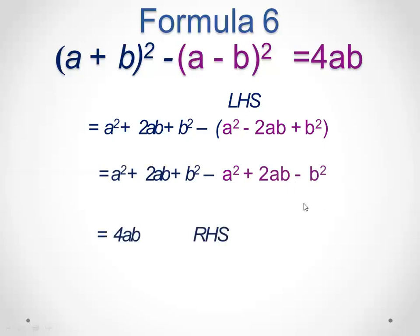Now distributing the minus sign, a square and minus a square cancel out, b square and minus b square cancel out, and 2ab plus 2ab gives 4ab — which is our right hand side. This has also been proved. I hope all three formulas are clear to you all. Thank you.